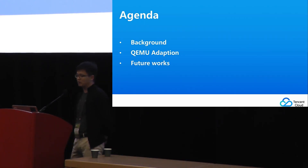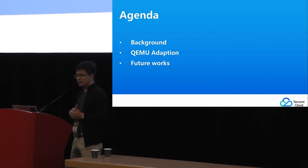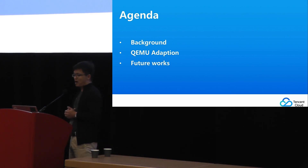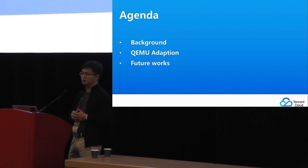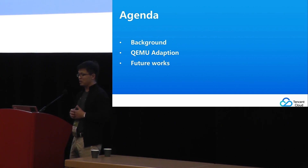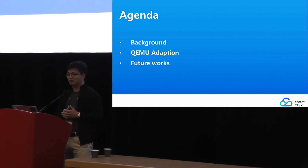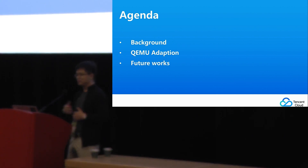In this topic, we are first talking about the background. In this section, I will explain what is the requirement of microservice and why we need to do this work. Later, we will introduce QEMU adoption — exactly what we have done on QEMU to make it suitable to run the workload. At last, we will show the future work. I will introduce the background and the QEMU adoption part, and Yule will do the last.